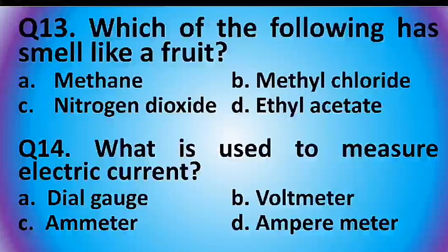Question 14: What is used to measure electric current? Options are: dial gauge, voltmeter, ammeter, or ampere meter. The answer is option C: ammeter.